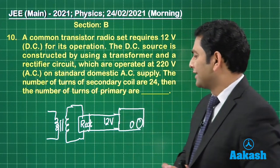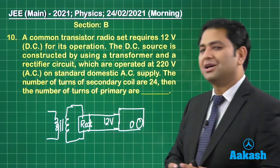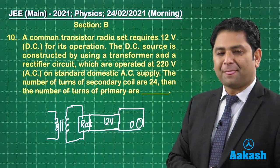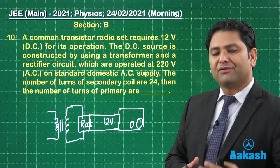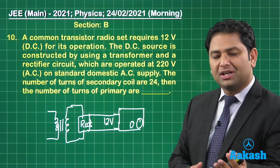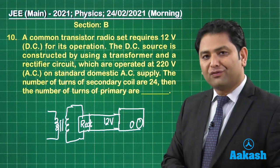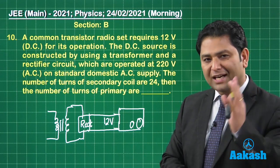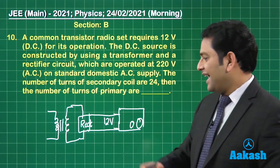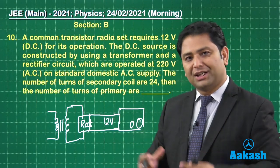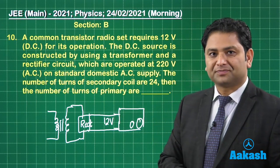Now, one thing is not categorically said that what sort of rectifier is it because depending upon half wave, full wave or the bridge, there are different patterns of output voltage waveform. So, that part is missing. And about the filter circuit, even that thing has not been given.